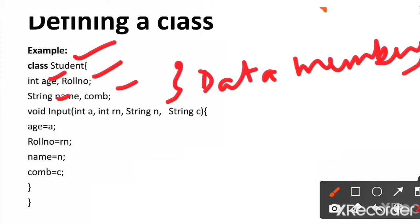And using an appropriate data type for those variables, I have defined the data members in the class. And next, a student has a behavior, a set of behaviors, right?